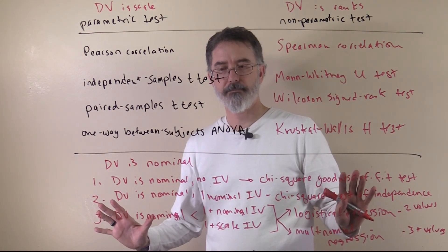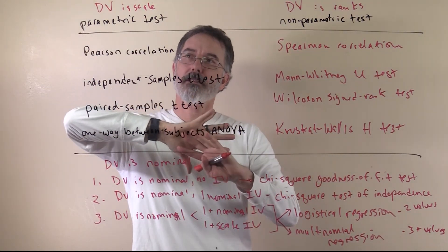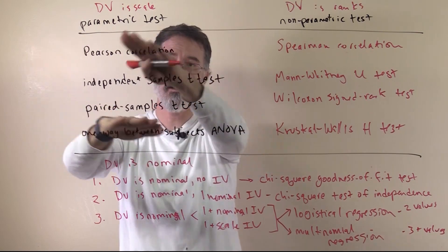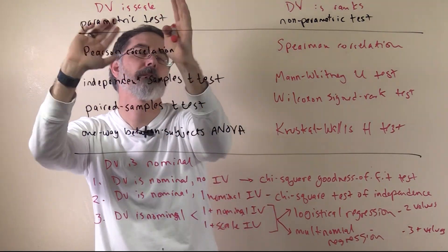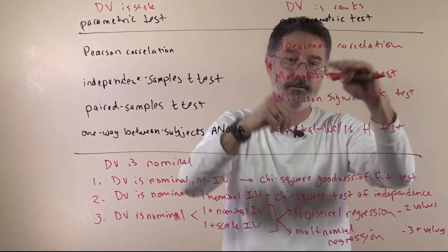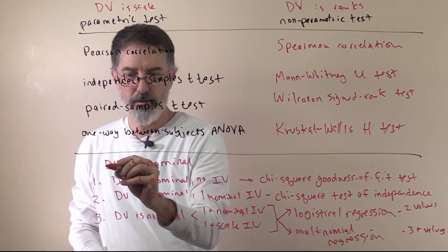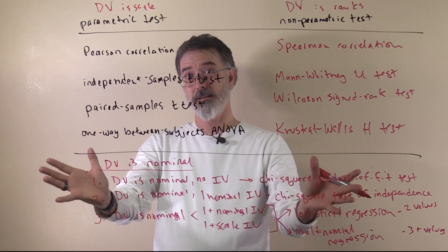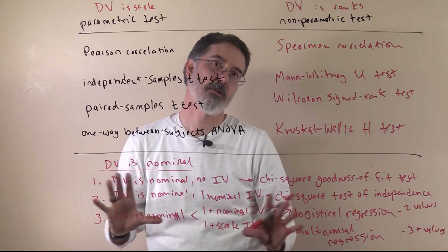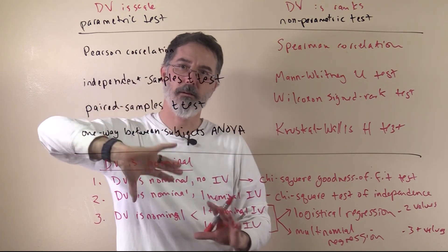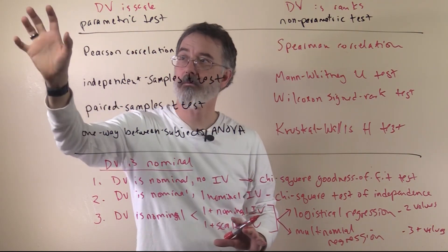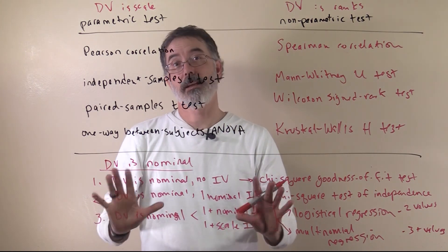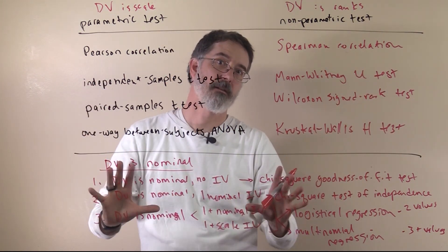The main point is that all class we have been talking about parametric tests. Statisticians prefer to use these whenever they can because they have the most statistical power — you are more likely to reject a false null hypothesis. These are great tests if you can use them. However, if your dependent variable is clearly not scale, and it is ranks, we have non-parametric tests available. If it is nominal, there are also tests for that scenario. A big part of doing statistical analysis is figuring out which test to use. This class is an introduction to the more commonly used tests, but there are lots more — this is really just the tip of the iceberg.